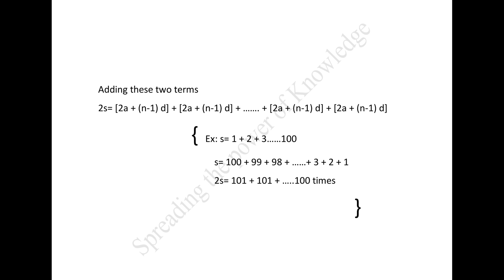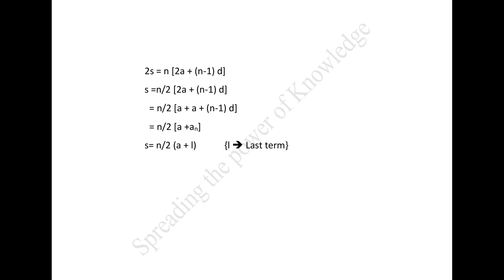For example, S equals 1 plus 2 plus 3, up to 100, and S equals 100 plus 99 plus 98, down to 1. So 2S equals 101 plus 101, repeated 100 times. Similarly, 2S equals (2a plus (n minus 1) times d) repeated n times, since there are n terms. Therefore, S equals n over 2 times (2a plus (n minus 1) times d), which also equals n over 2 times (a plus (a plus (n minus 1) times d)). Therefore, S equals n over 2 times (a plus aₙ).